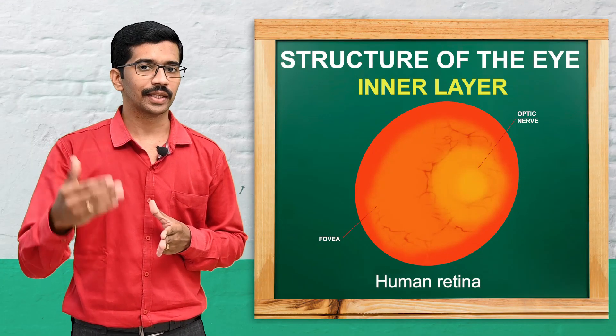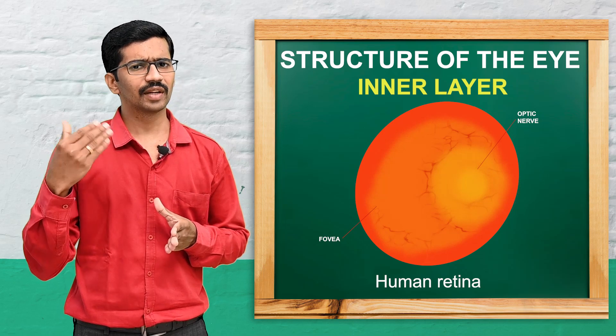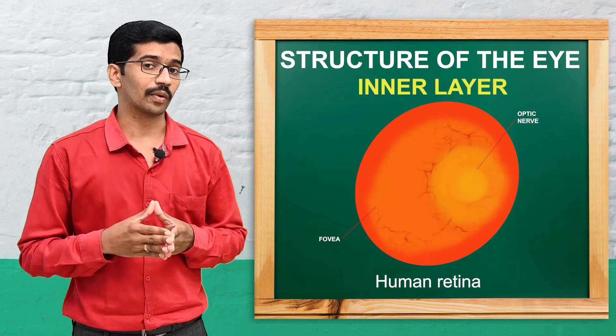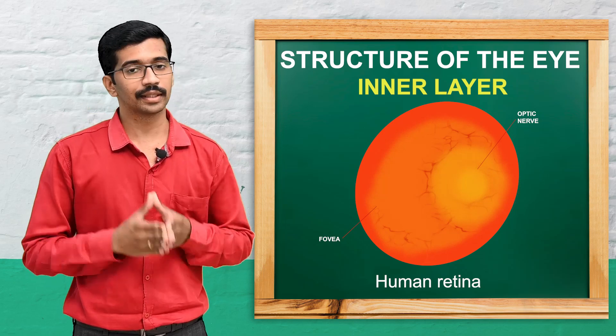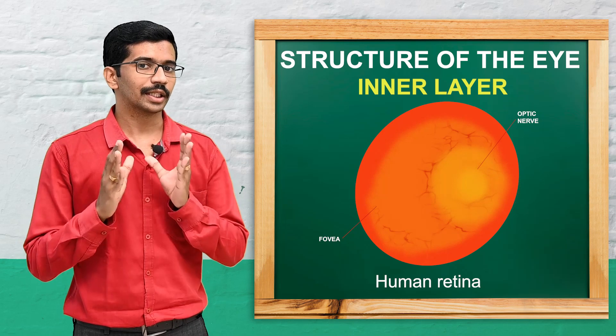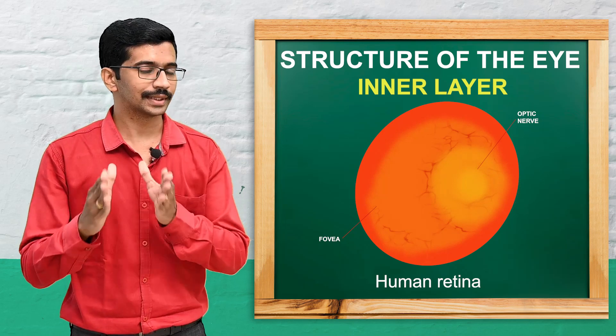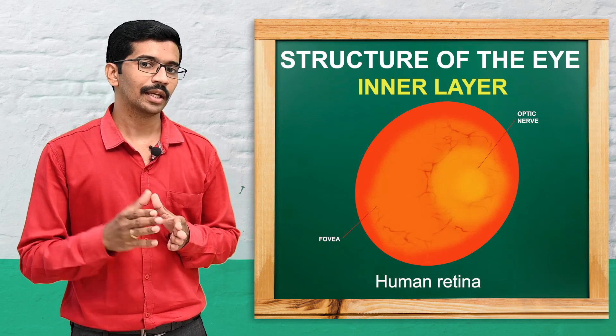So these are the various structures of the eyeball — the outer layer, middle layer, and inner layer. This is the essential organ of sight.